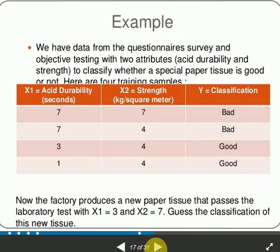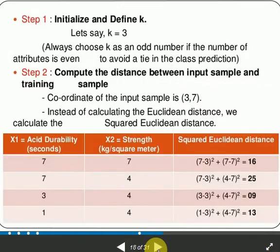Guess the classification of this new tissue. We have to guess whether the new paper tissue can be classified as good or bad. So, X1 is 3 and X2 is 7. We can measure the distance between the given input.